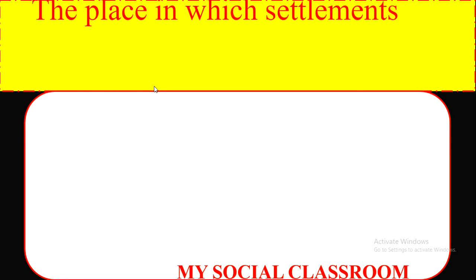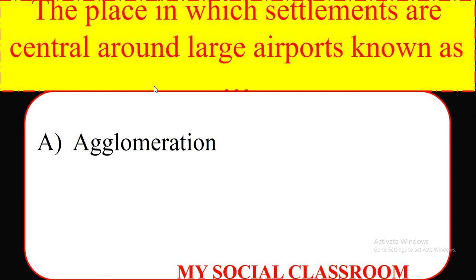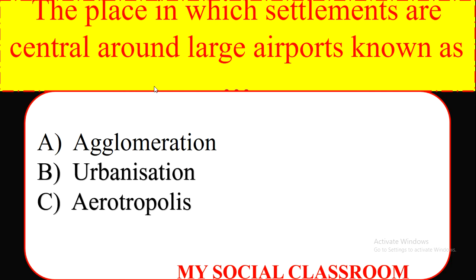The place in which settlements are centralized around a large area is known as: agglomeration, urbanization, ecumenopolis, metropolis. Correct answer: ecumenopolis.